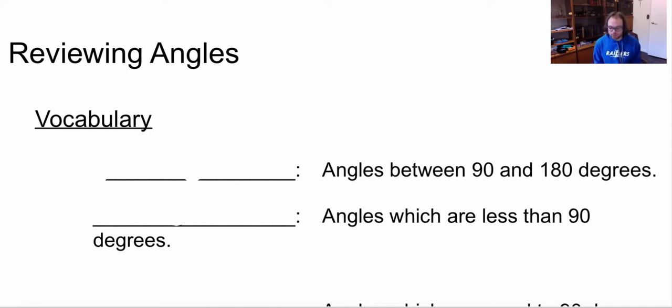So let's look at our first one. It says an angle between 90 and 180 degrees. Well that is going to be an obtuse angle. Now my next one says an angle which are less than 90 degrees. If it's less than 90 degrees that's going to be an acute angle.